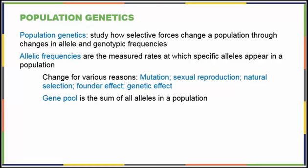When we study population genetics, we're looking at how selective forces change a population through changes in allele and genotype frequencies. Allelic frequencies are measured rates at which specific alleles appear in a population. So we actually count how many homozygous dominant traits the population has or how many homozygous recessive traits it has. These frequencies can change for various reasons.